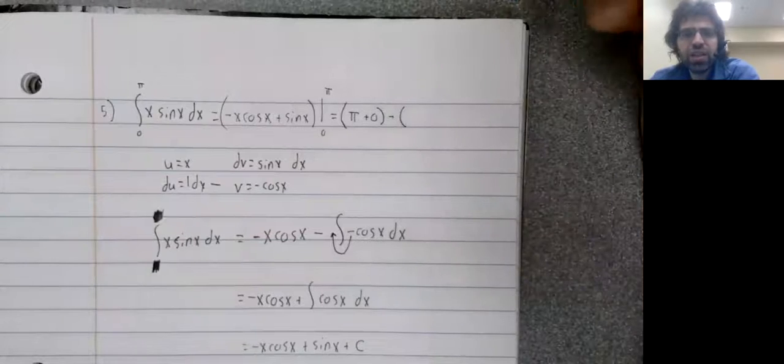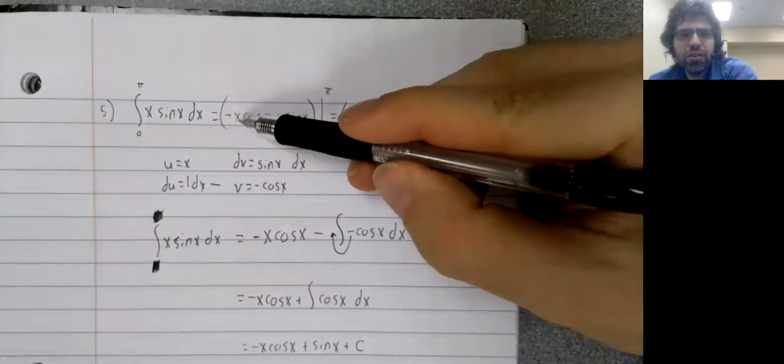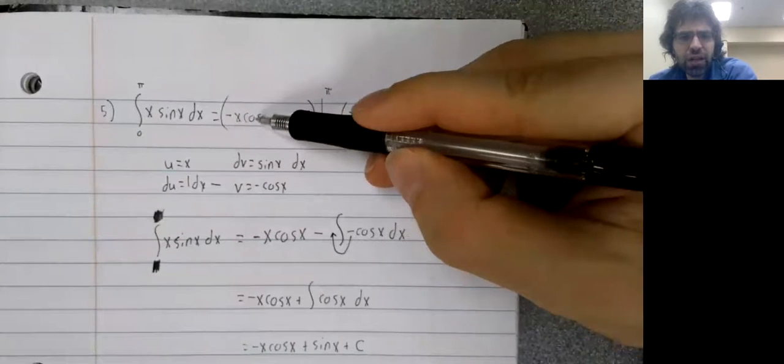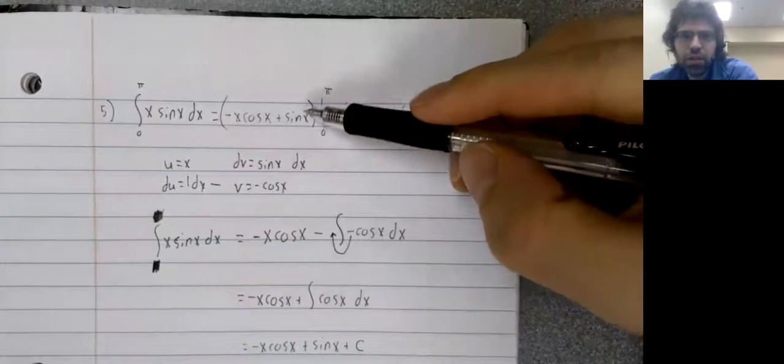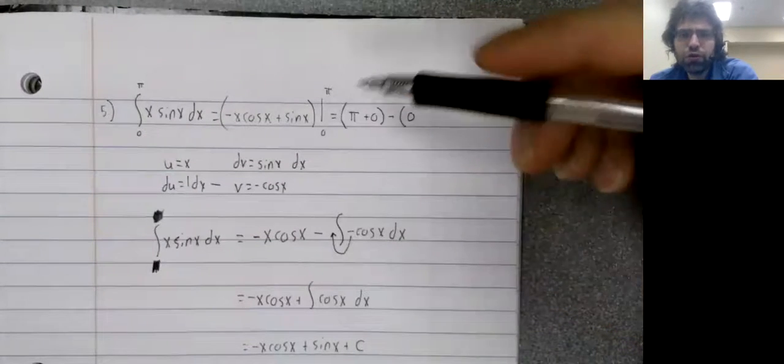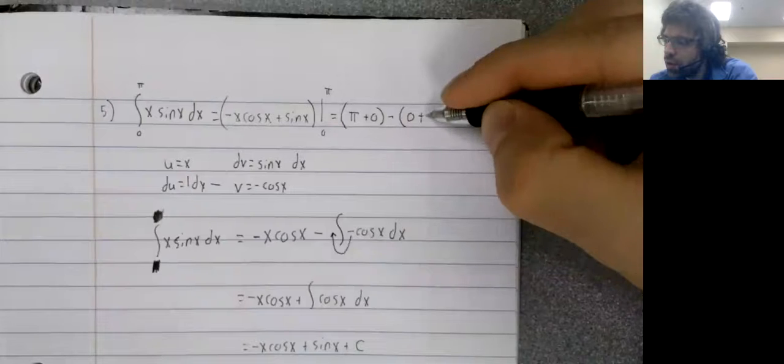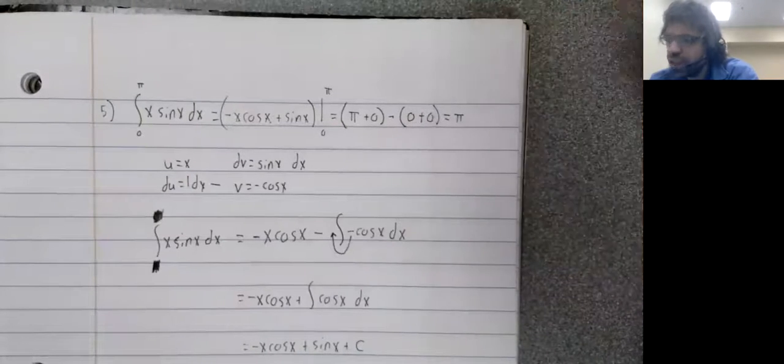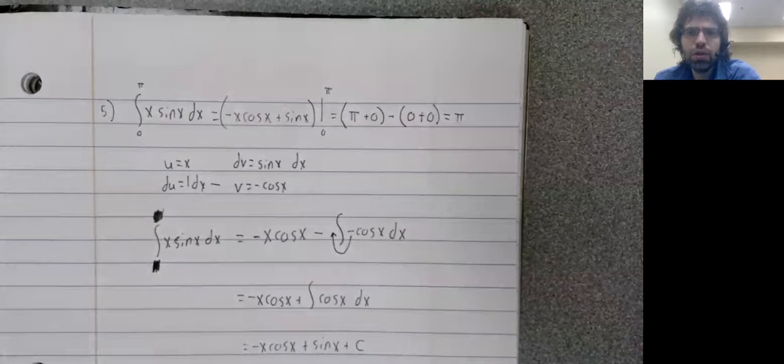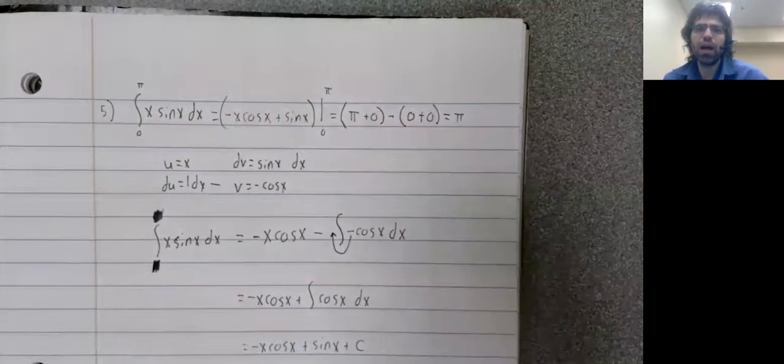When we stick zero in, zero times anything is zero. The sine of zero is zero. So, pi.